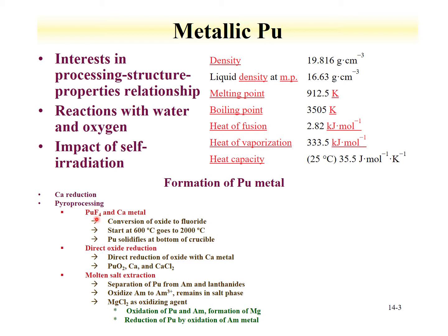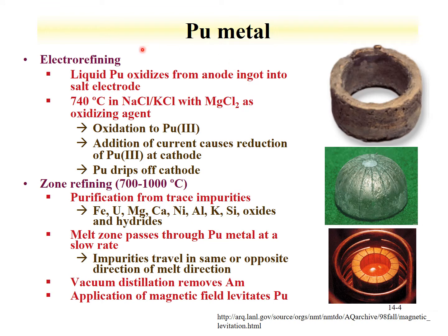When the reduction occurs, plutonium is more dense and solidifies at the bottom of the crucible. Similarly, direct oxide reduction with calcium metal can be performed using plutonium dioxide, calcium, and calcium chloride. There is also molten salt extraction, where the molten salt system is used as a solvent in which plutonium can be reduced to the metallic state, while the molten salt solvent is not affected by the reduction.